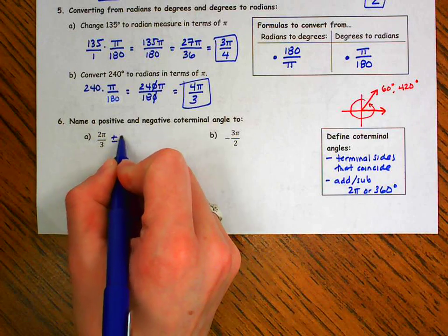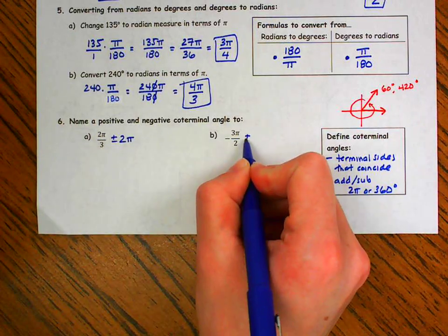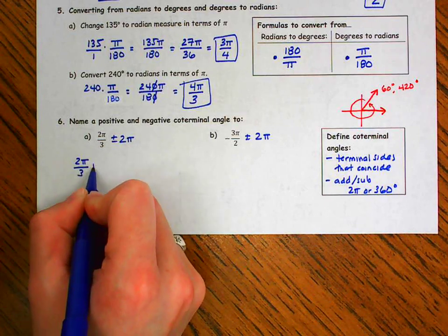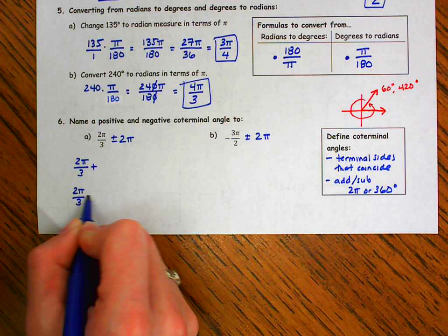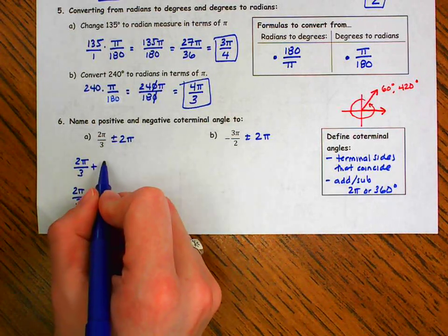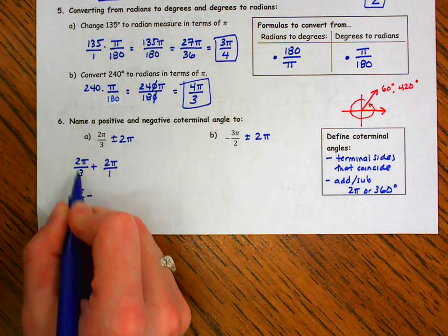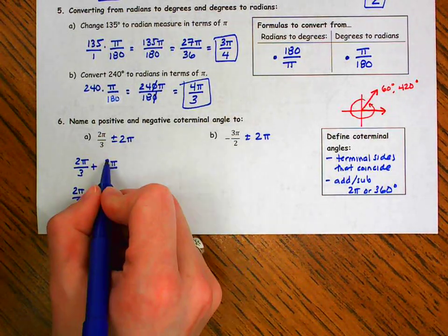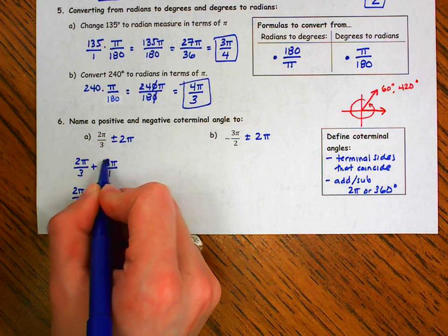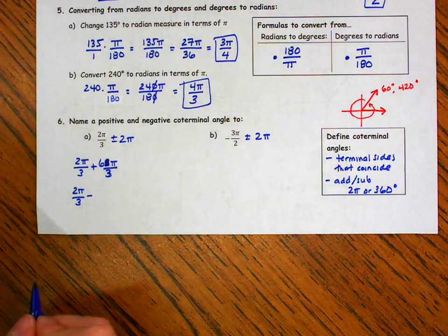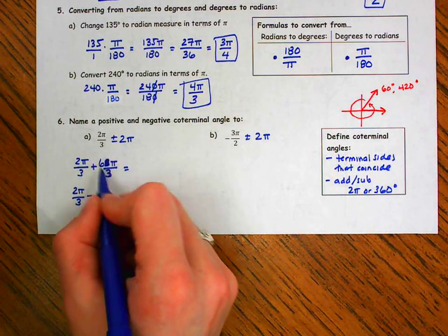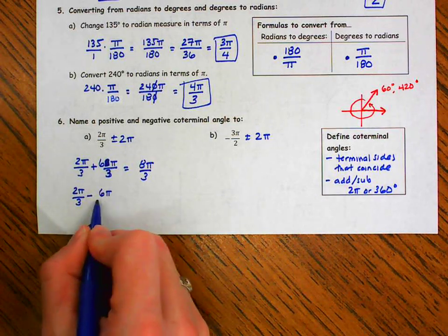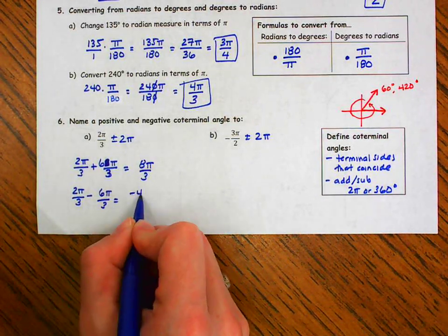I need to add or subtract 2 pi in both cases. I'm going to do 2 pi over 3 plus 2 pi, and 2 pi over 3 minus 2 pi. I don't have a common denominator, so I need to multiply 2 pi by 3 over 3, making it 6 pi over 3. Adding gives me 8 pi over 3. Subtracting 6 pi over 3 gives me negative 4 pi over 3. So here is my positive and negative coterminal angle.